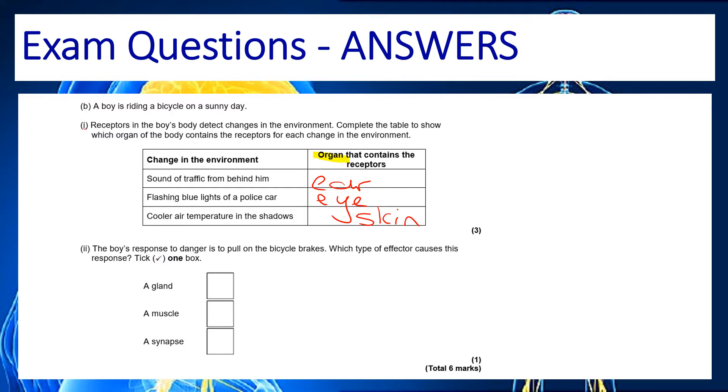Okay, the boy's response to danger is to pull on the bicycle brakes. What type of effector? So we're looking for a type of effector and the one that we've met most often is going to be the muscle.